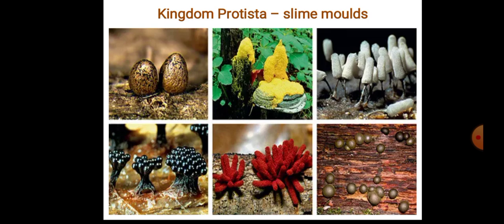Slime molds are saprophytic protists. The body moves along decaying twigs and leaves, engulfing organic material. Under suitable conditions they form an aggregation called plasmodium, which may grow and spread over several feet.